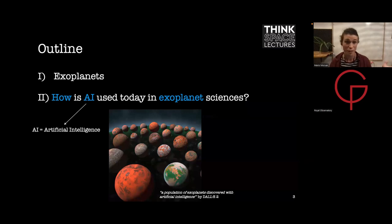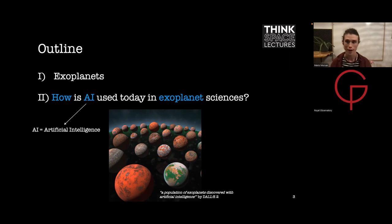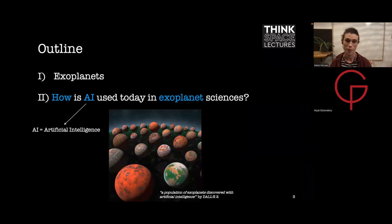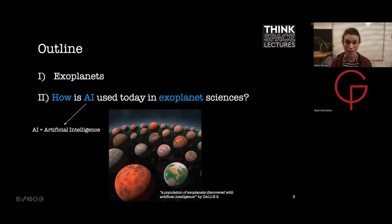This is our outline for today. First, we're going to introduce exoplanets and broadly where we are in terms of exoplanet discoveries today. Then we'll discuss more specifically the use of AI for exoplanets — what deep learning and artificial intelligence are — and then mention a few successful applications of AI techniques used today for exoplanet studies. Hopefully we'll leave with some understanding of how AI is used today for exoplanet sciences.